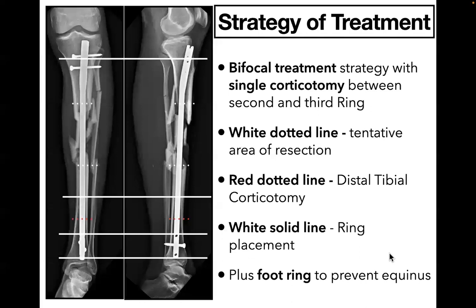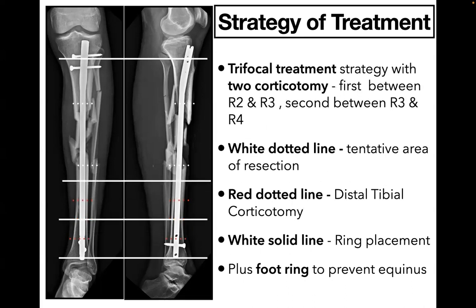As a treatment strategy, one can opt for single corticotomy or double corticotomy. If a single corticotomy is done, the treatment strategy is termed bifocal treatment — simultaneous distraction at the corticotomy site and compression at the gap site. If one opts to reduce time in frame, one can choose trifocal treatment with 2 corticotomies, where distraction occurs at 2 corticotomy sites and compression at the docking/non-union site.